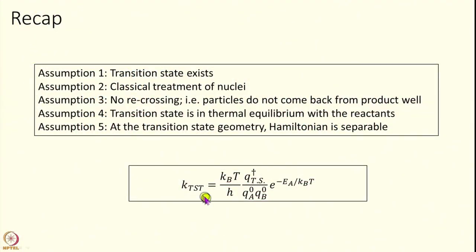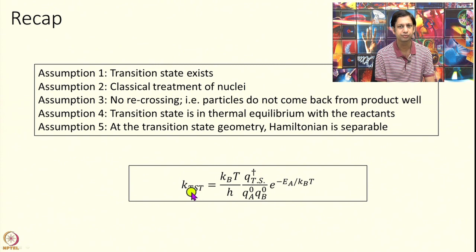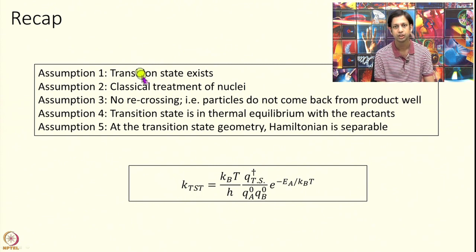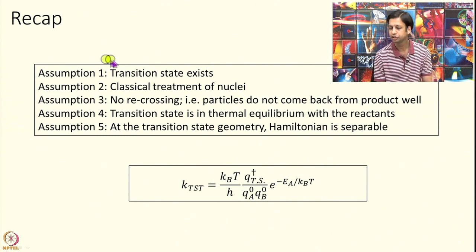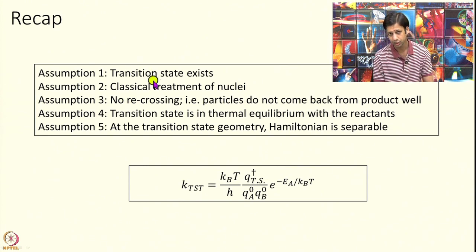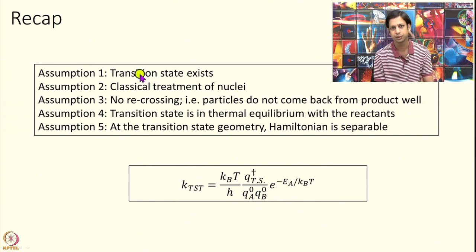Just a quick recap. The transition state rate we derived is given here — we wrote a formal derivation of this. This derivation works under 5 assumptions. One: that the transition state exists. The transition state is the structure which is the maximum energy structure along the reaction path and the minimum energy structure along the coordinate perpendicular to the reaction coordinate.